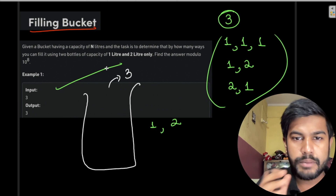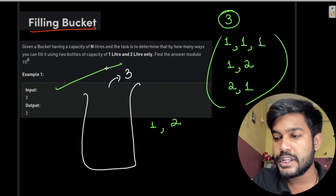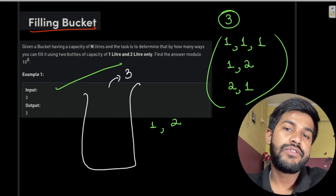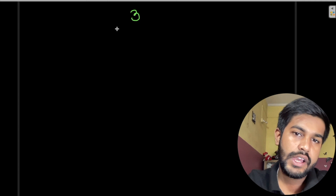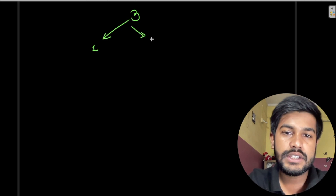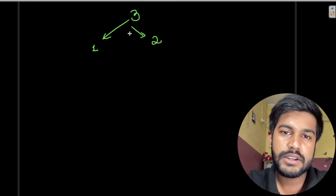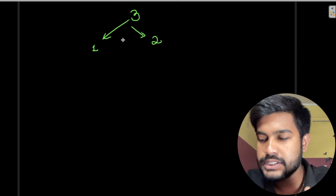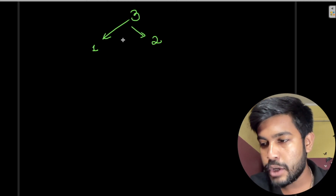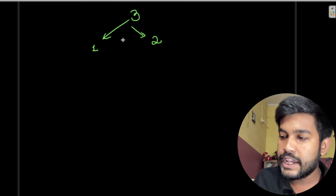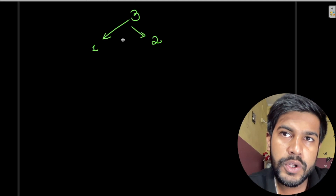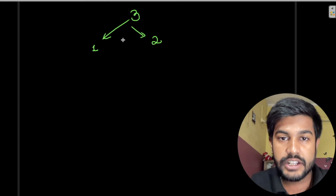This seems like a permutation-combination problem at first — using a combination of 1 and 2, what would be the number of combinations? But it is not that scenario if you have already solved recursion. Let us try solving it for 3. We can start with 1 or with 2. We would explore all possible ways. You try to have all possible combinations, and the combinations that lead you to the number N would be the correct answer.